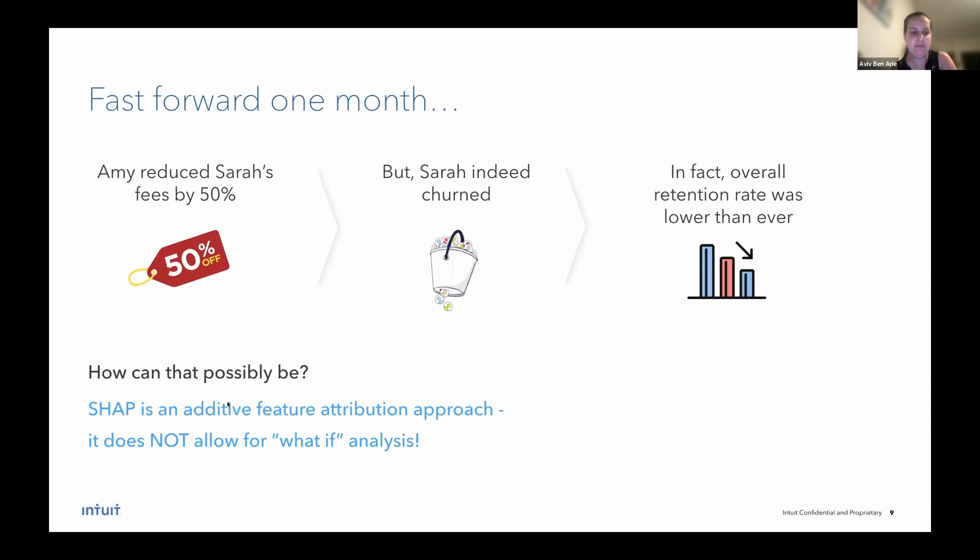So apparently SHAP is an additive feature attribution approach, meaning it attributes a weight or an importance for every feature in the model, but it does not allow for what if analysis, meaning if we change one or more features, SHAP doesn't allow us to understand what will happen to the model prediction. And this is exactly what happened. We changed one of the features, the fees, and the result was unexpected.